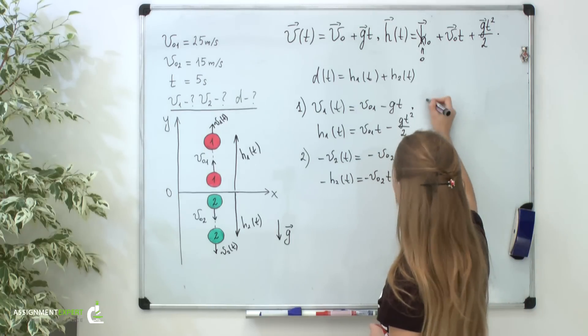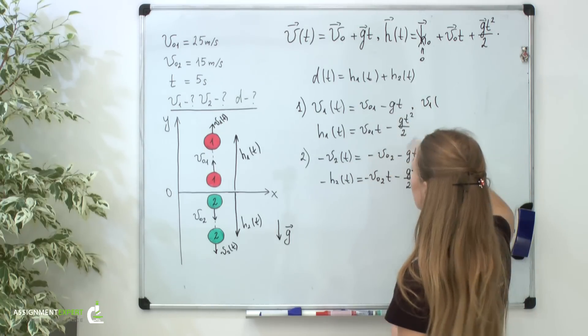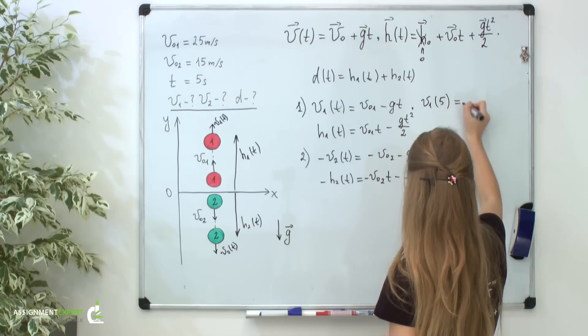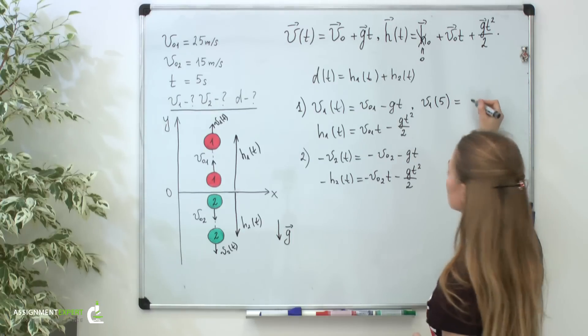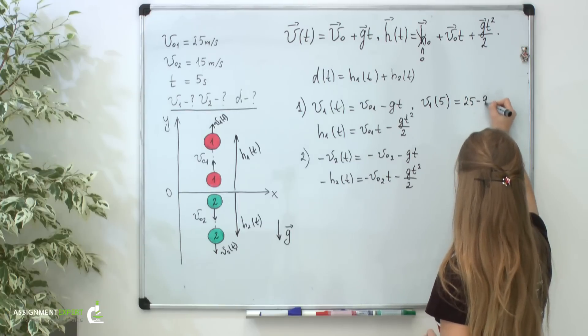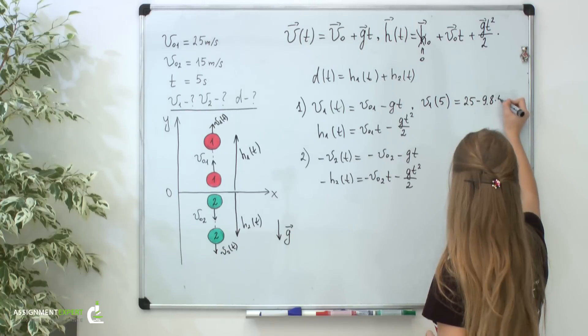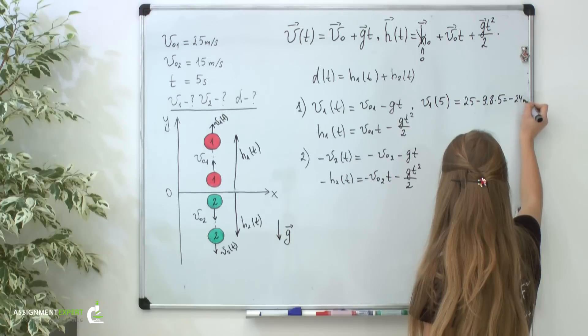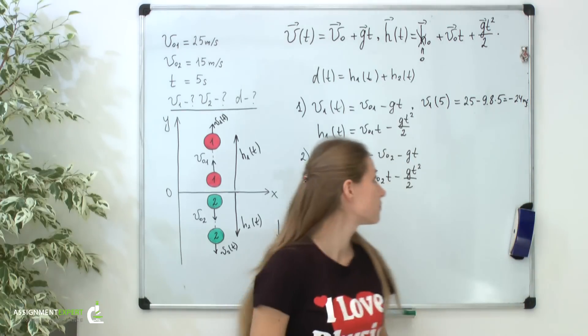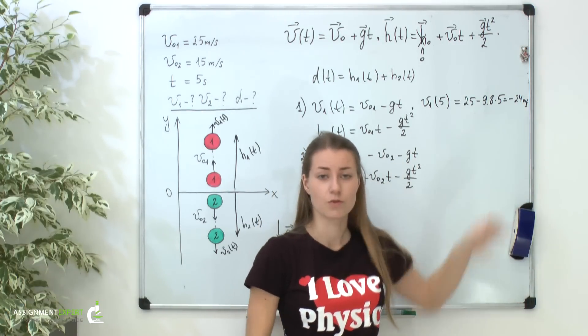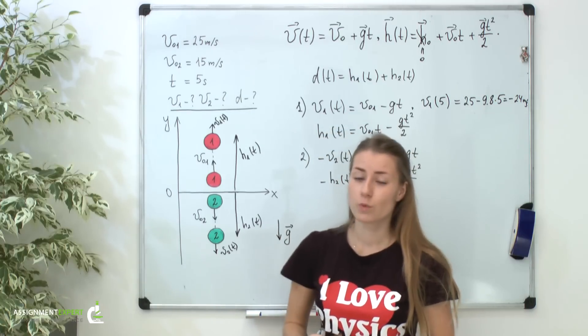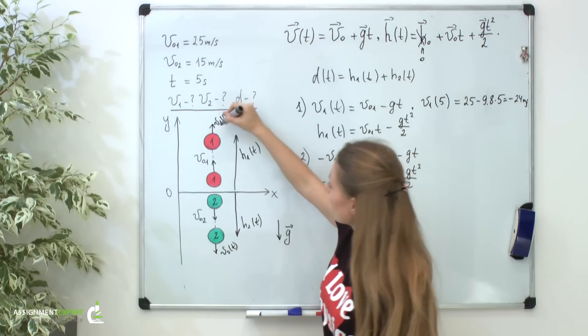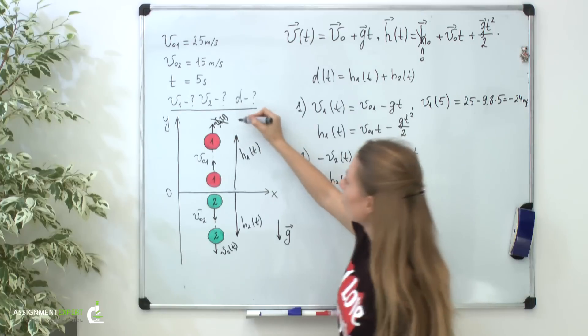Now, let's find the velocity v1 and all the other quantities at the time which is equal to 5 seconds. v1 at 5 seconds is 25 minus 9.8 times 5. We get minus 24 meters per second. Indeed, you can see that we got a negative velocity for our red ball. It means that we are mistaken with choosing a direction of the velocity. And, in fact, after 5 seconds from the moment of the throw, our red ball will be falling down.